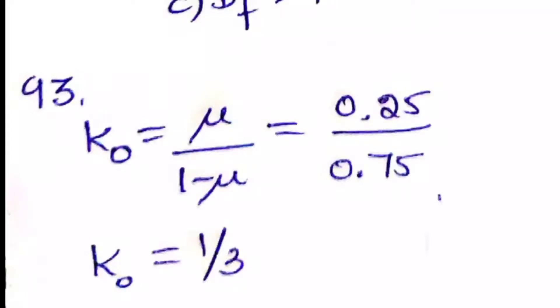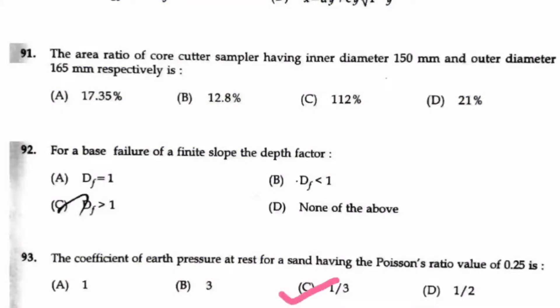So mu is the Poisson's ratio, so 0.25 by 0.75 will give you 1 by 3. So here the answer will be option C.